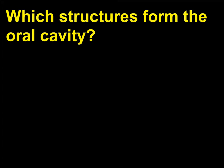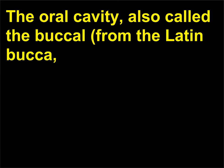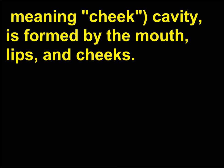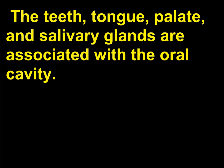Which structures form the oral cavity? The oral cavity — also called the buccal (from the Latin bucca, meaning 'cheek') cavity — is formed by the mouth, lips, and cheeks. The teeth, tongue, palate, and salivary glands are associated with the oral cavity.